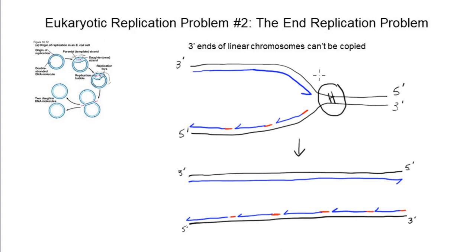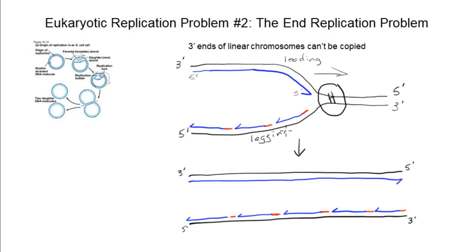In this diagram, we're looking at a replication fork that's opening up to the right, with helicase moving left to right. Our top strand of parental DNA is 3' to 5' in the left-to-right direction. So the newly synthesized daughter strand is being synthesized 5' to 3' in the same direction helicase is moving — this would be our leading strand at the top. At the bottom is the lagging strand, which has to be copied in segments because synthesis is opposite the direction the helicase is moving. The short segments in red are RNA primers that have not yet been removed, and the blue is the DNA added on by the eukaryotic equivalent of DNA polymerase 3.